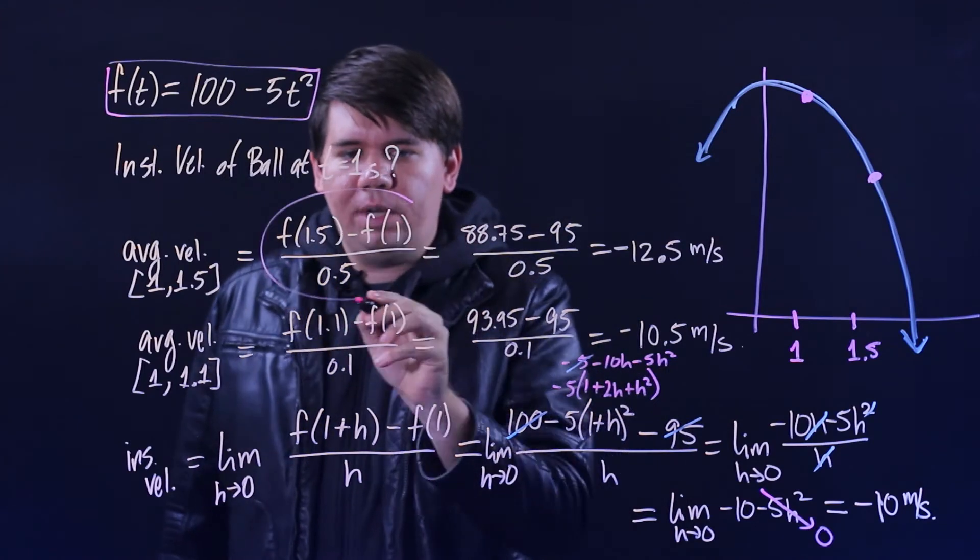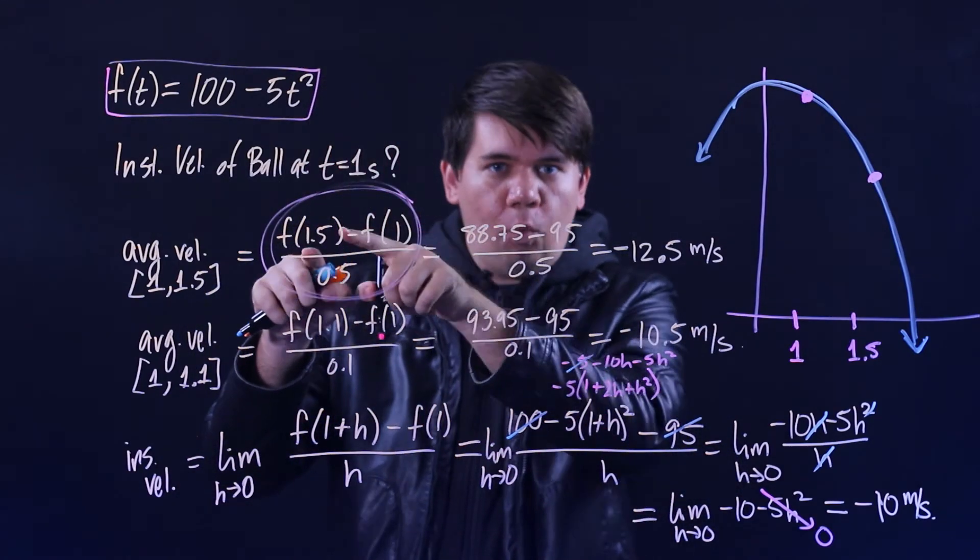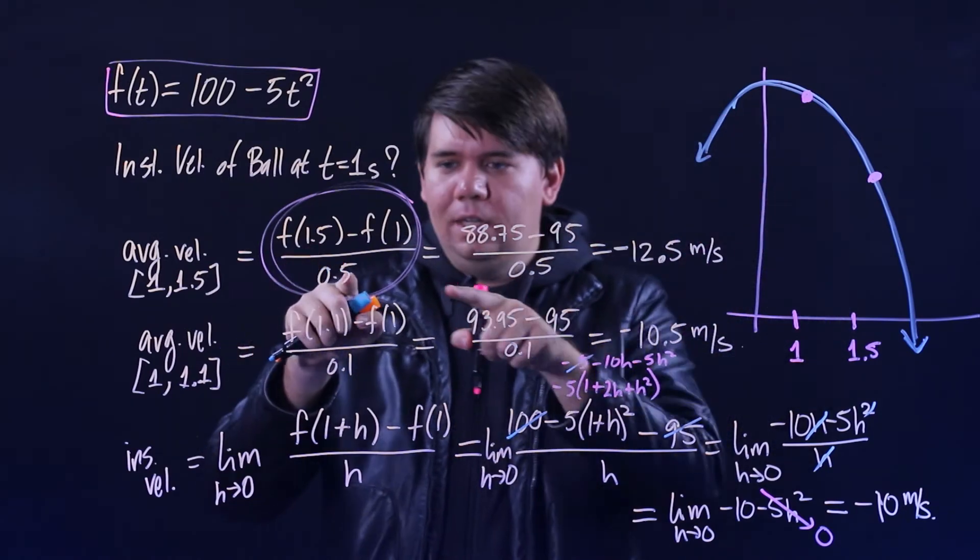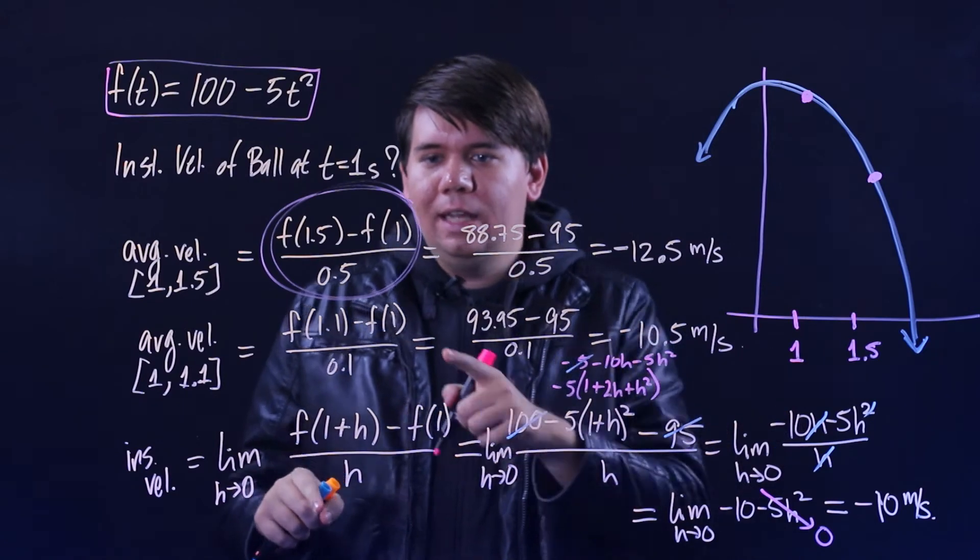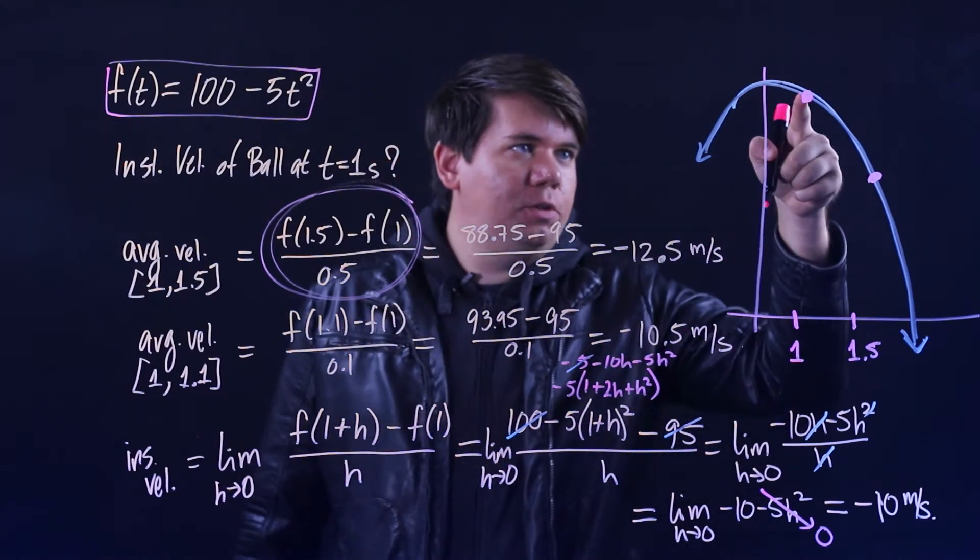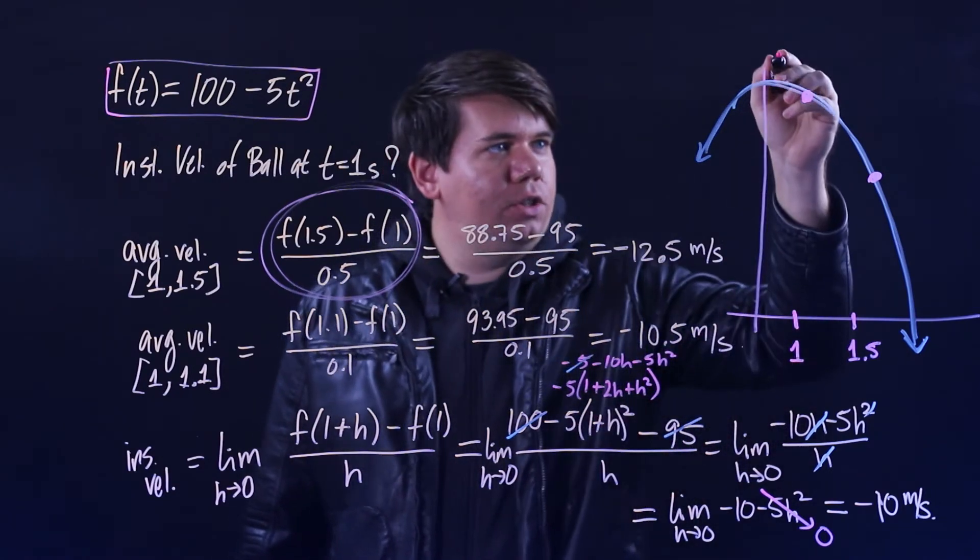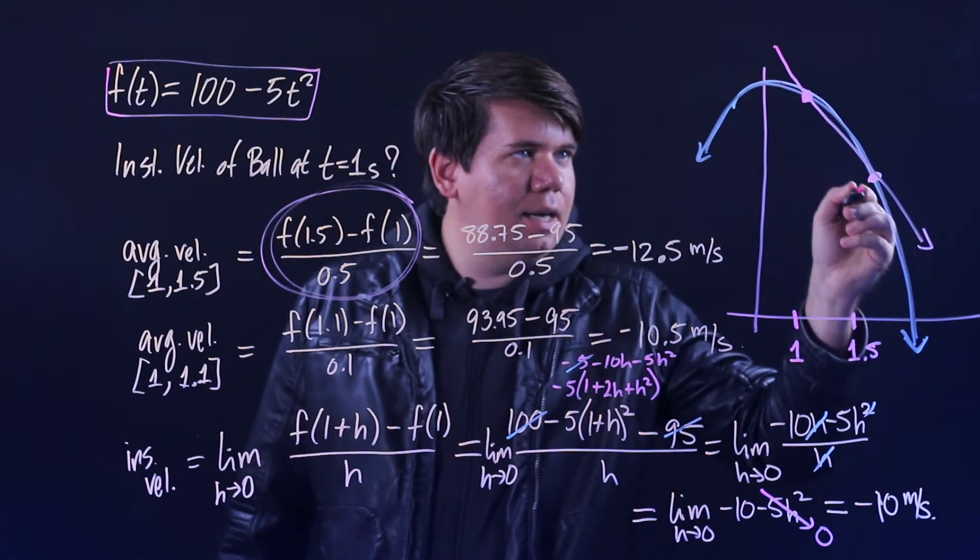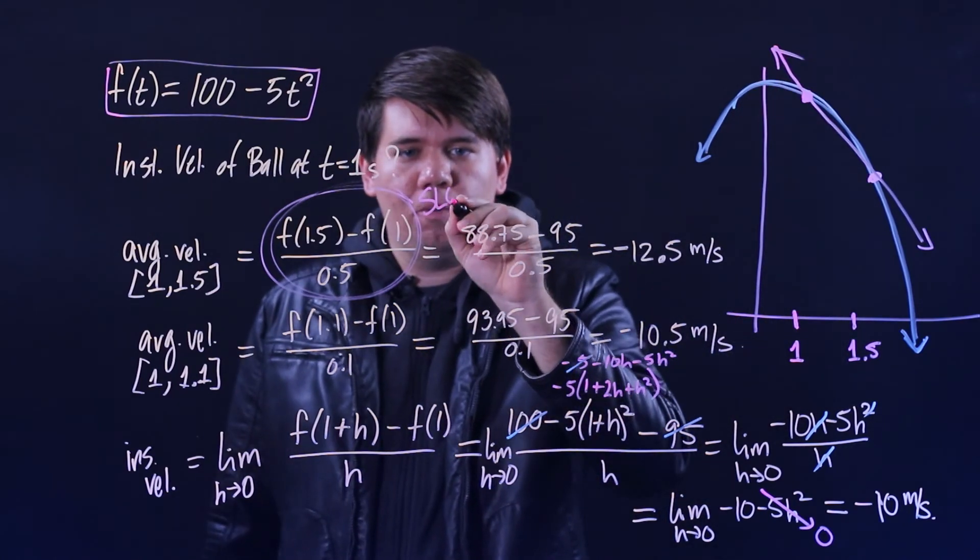Now what does this value here represent? Well, it's the change in the y-values, my function values, divided by the change in these t-values, my x-coordinate. That is just my slope. That's my rise over my run, it's how much my height is changing over how much I'm running. So that is just the slope of the line that connects those two points. So this represents a slope—in particular, since this is a line connecting two points, we call this a secant line. This is giving you the slope of this secant line.